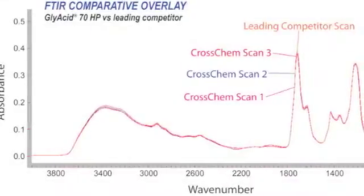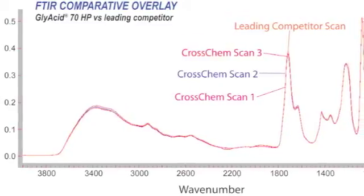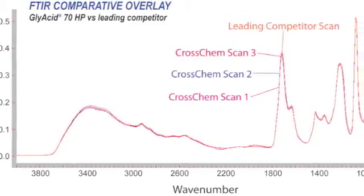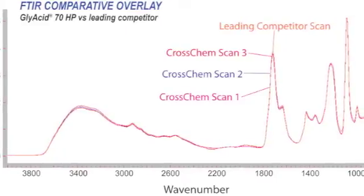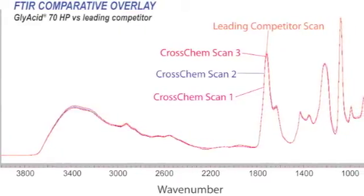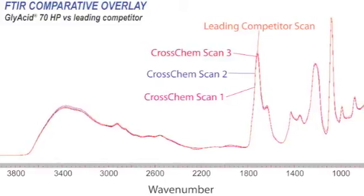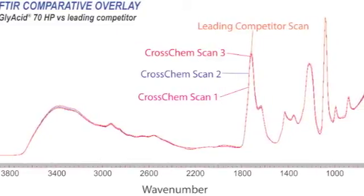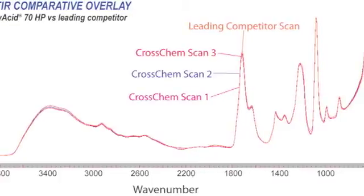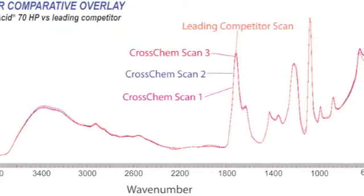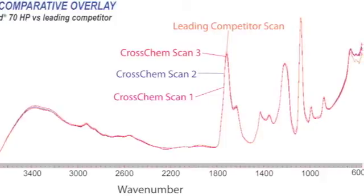This scan compares glyacid with an industry leader. The analysis overlays the FTIR spectrum of three glyacid 70 HP lots with the leading competitor. Based on the overlay, glyacid possesses an identical infrared spectrum. In other words, while they use a different technology, the finished molecules of glyacid and the industry leader are the same.